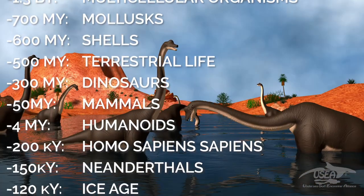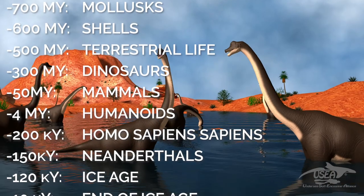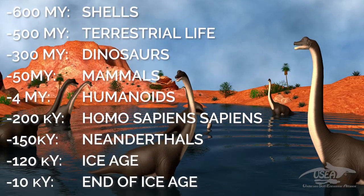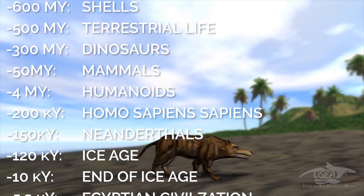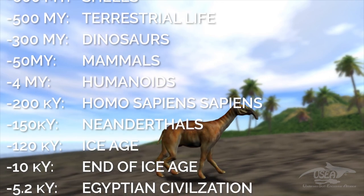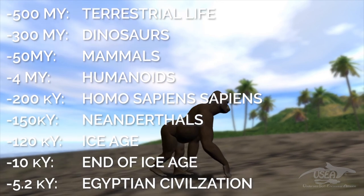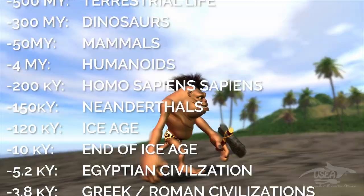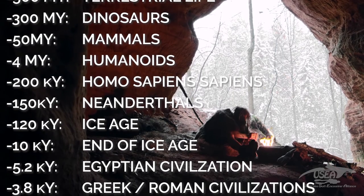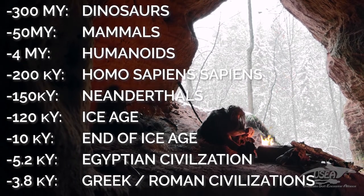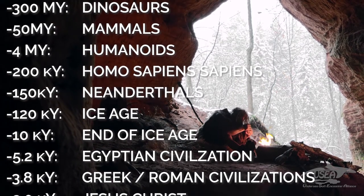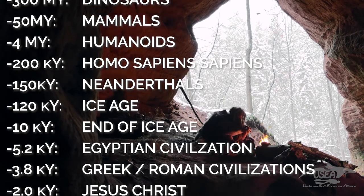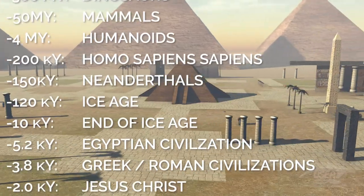300 million years ago was the reign of the dinosaurs. And this reign ended 65 million years ago, and then came the mammals. The first humanoids appeared about 4 million years ago. And our species, Homo sapiens sapiens, came 200,000 years ago. Then came the Ice Age.